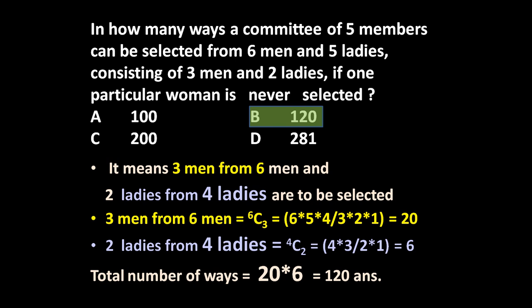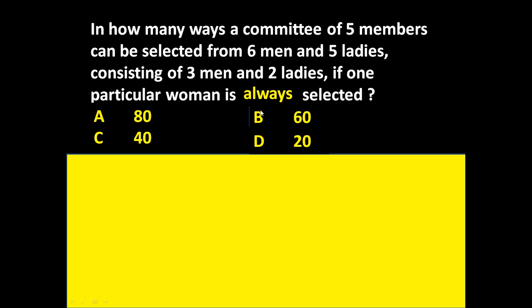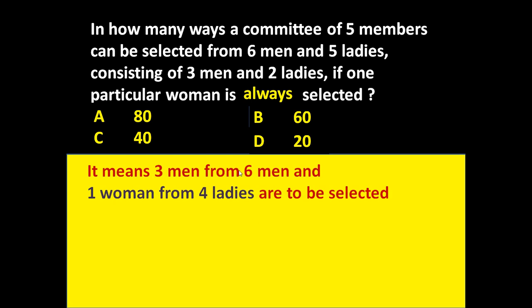Now if we change this question by just one word, such that one particular woman is always selected — the remaining question is the same. A committee of five members selected from six men and five ladies, consisting of three men and two ladies, but now one particular woman is always selected, whereas earlier she was never selected.